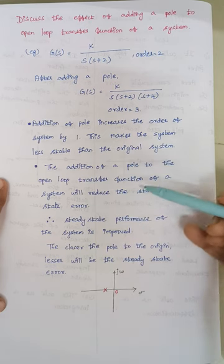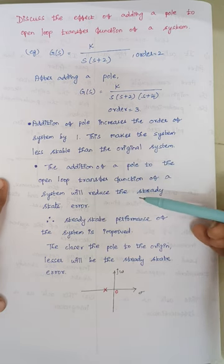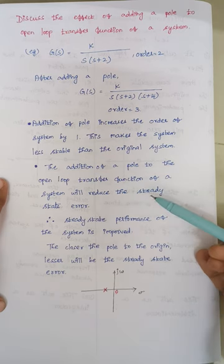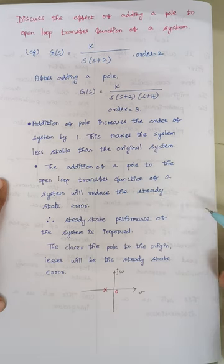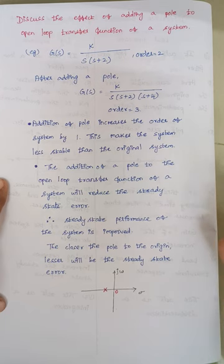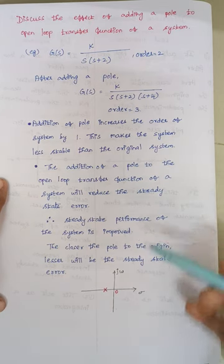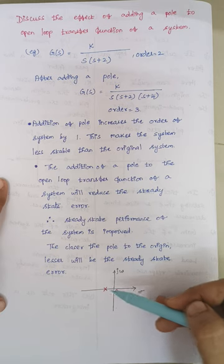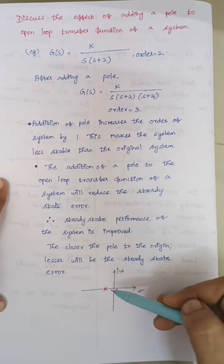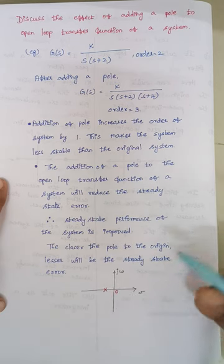The addition of a pole will reduce the steady state error. Whenever the steady state error is reduced, automatically the performance of the system is said to be improved. Whenever the poles are located closer to the origin, then there will be less steady state error.